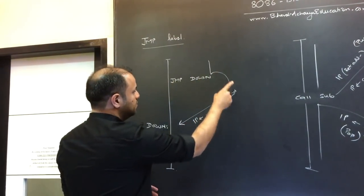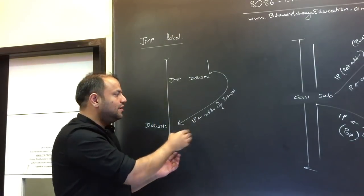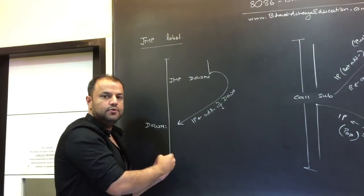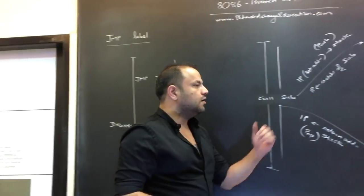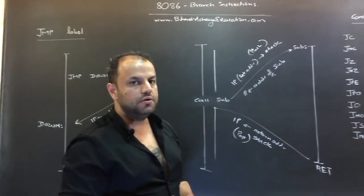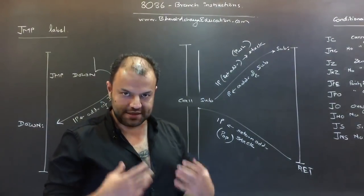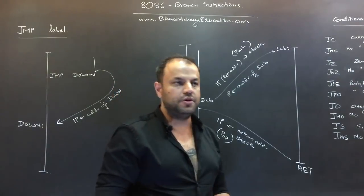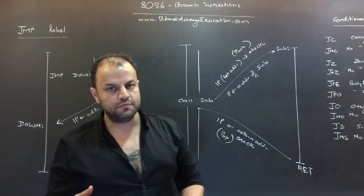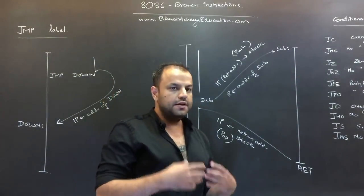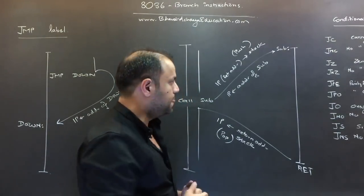In a jump, you go to a new location and you continue — you go there for good and there's no question of coming back. But in a call, you're calling a function. A function in our language is also called a subroutine. In C and Java programs we call them functions or procedures; here we call them subroutines.